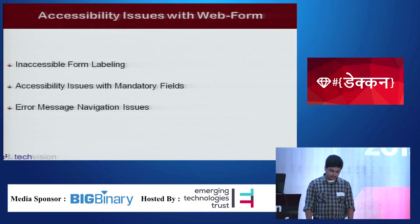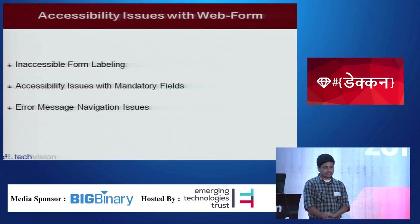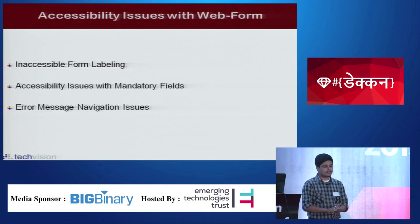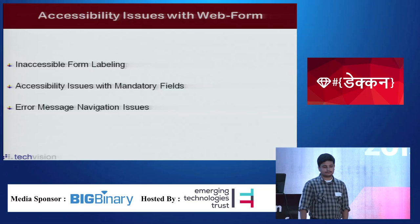Also, there is an accessibility issue with mandatory fields — there is no information given by the screen reader when a field is mandatory. Similarly, for the maxlength property, like for text fields and text areas, if the maxlength property is set, the screen reader will not announce anything about it. Another issue is error message navigation, which is also inaccessible in a basic Rails form. These inaccessible issues in a basic form will now be demonstrated by Sangpal using a screen reader.